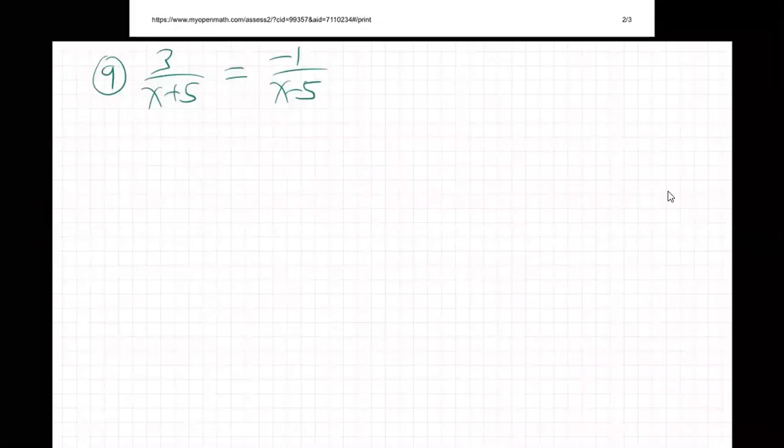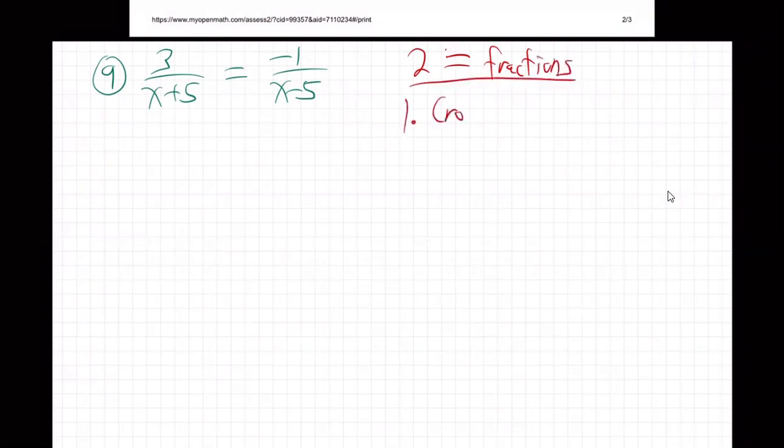Okay, so two equal fractions. This one is actually going to, we're going to do something a little different. It'll actually end up being a little easier. When you have two equal fractions, step one is you just simply cross multiply. You don't have to mess around with common denominators and all that if you just have two equal fractions.